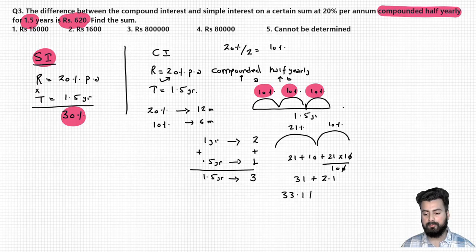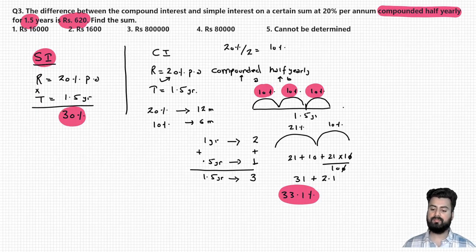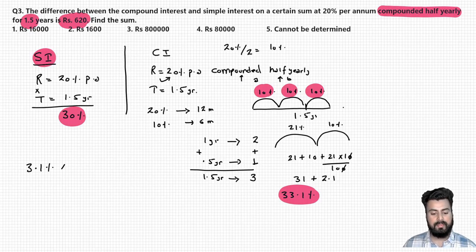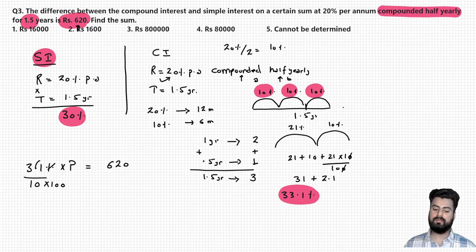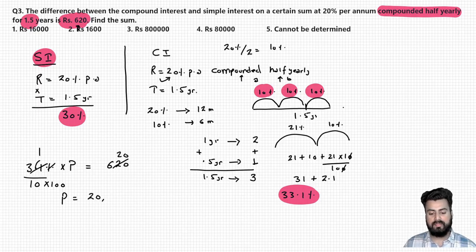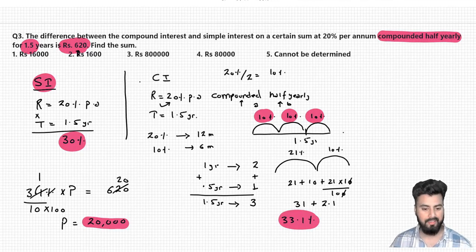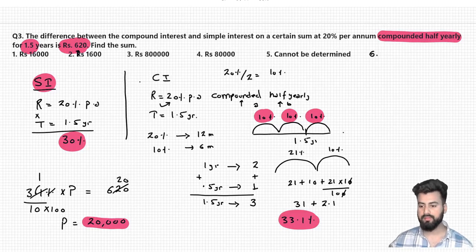Comparing the effective rate of interest in CI (33.1%) and SI (30%), the difference is 3.1%. So when I calculate 3.1% of the principal, the value should equal 620. Removing the decimal gives 31 in the numerator with 10 in the denominator, and removing the percentage sign adds 100. So 31/1000 × P = 620, giving P = 620 × 1000/31 = 20,000. The answer is 20,000.